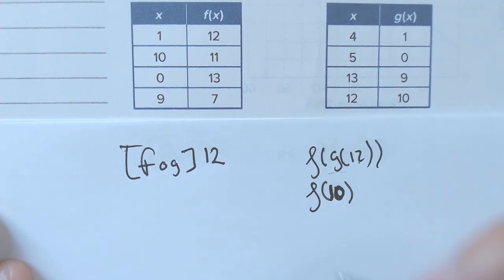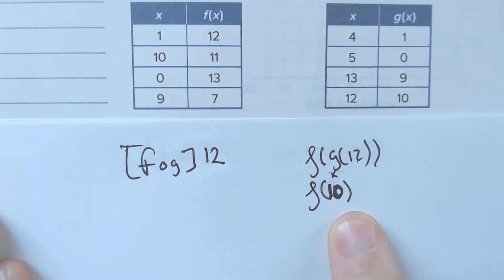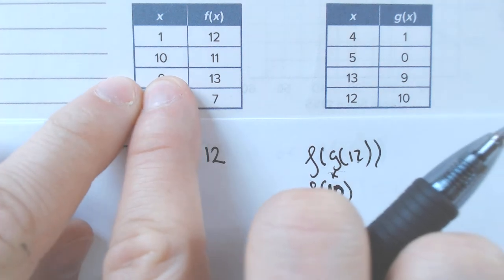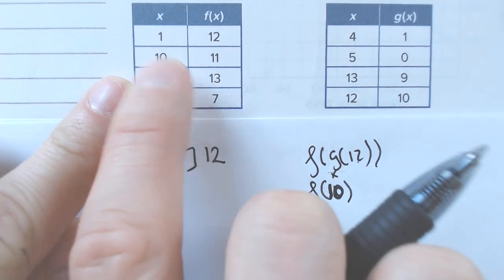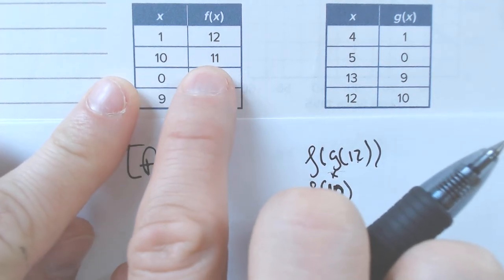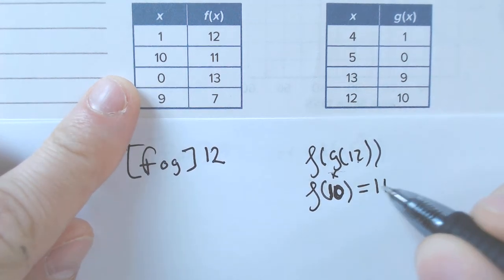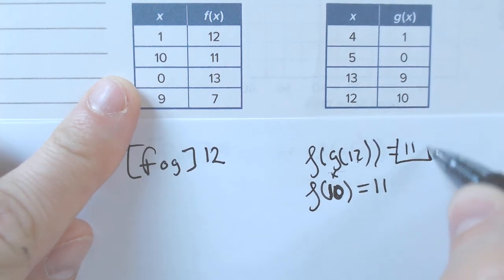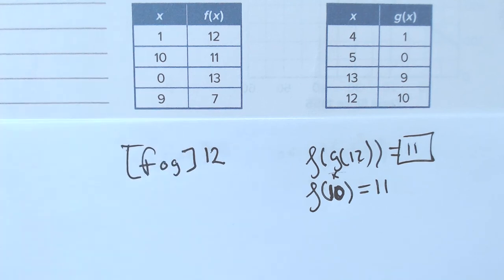Then once I get the 10, that is again the x value, I need to plug that in to the f of x. 10 as the x value gave me an 11 for the y value. So, this whole thing is 11. All right?